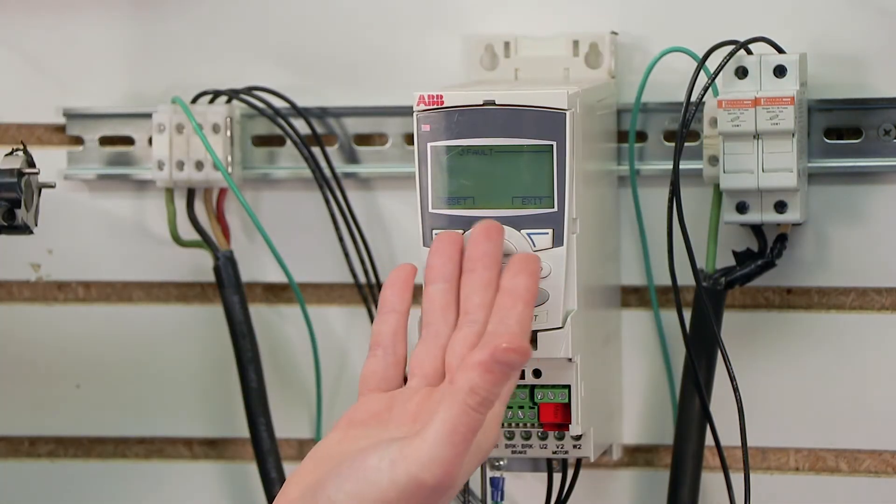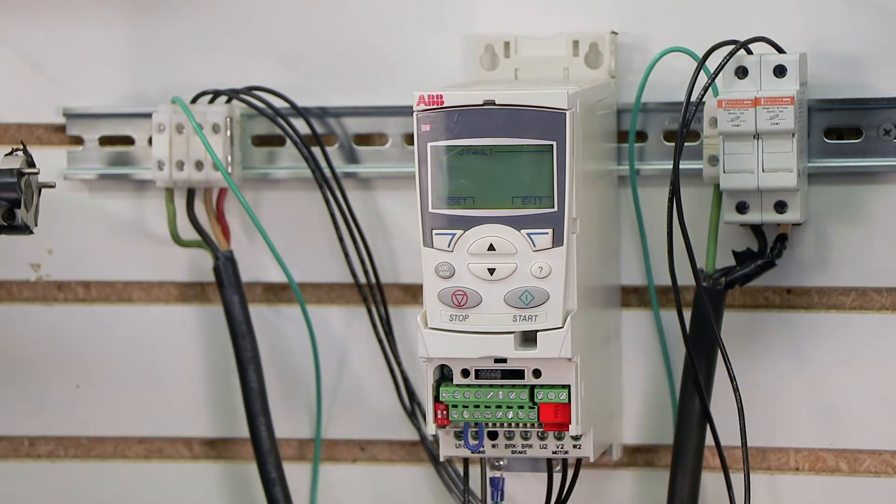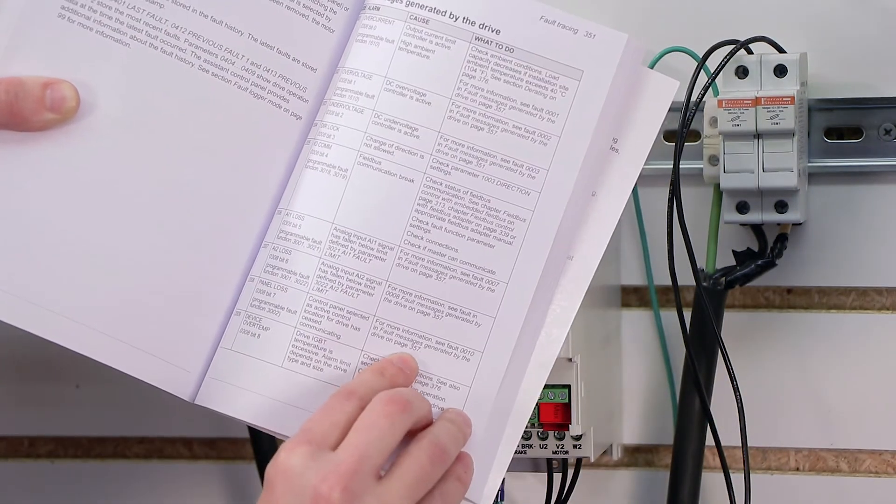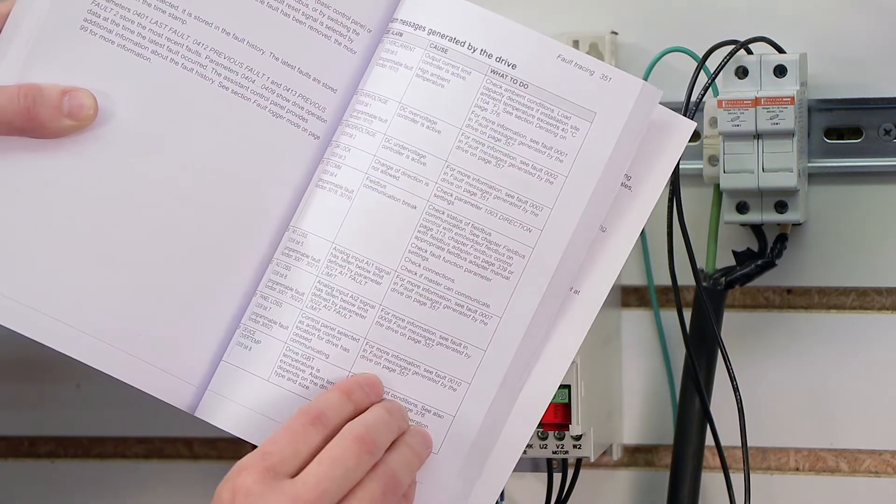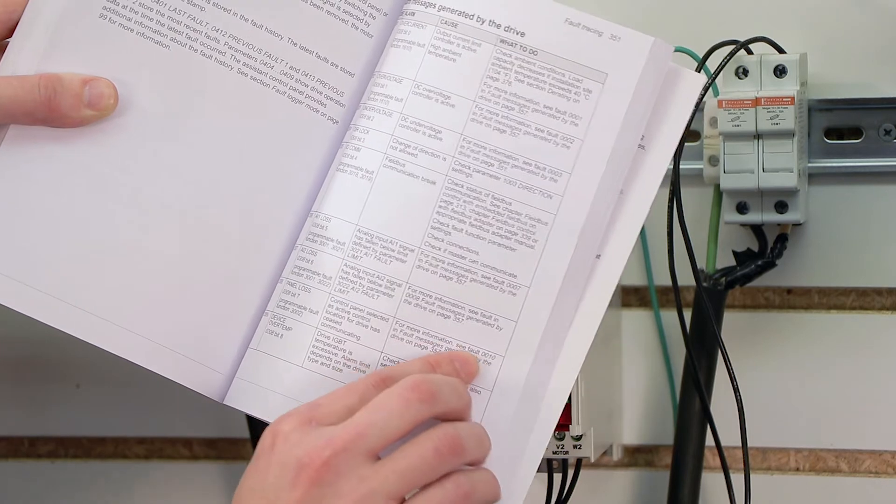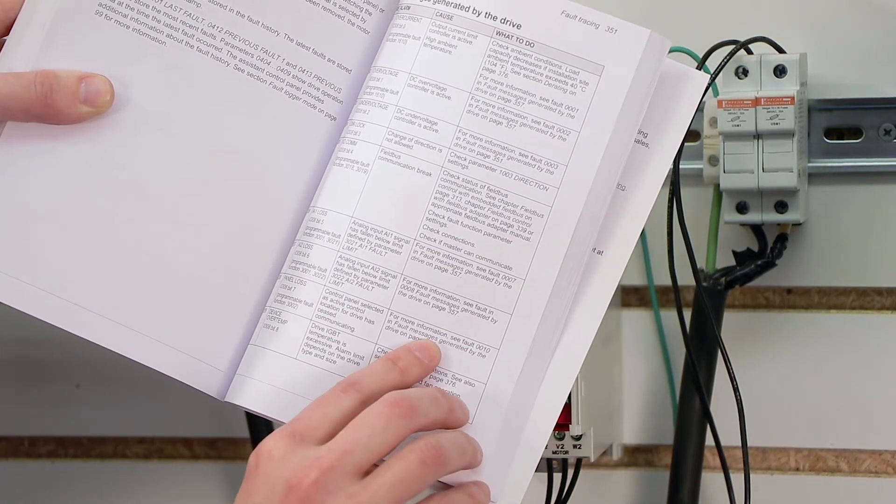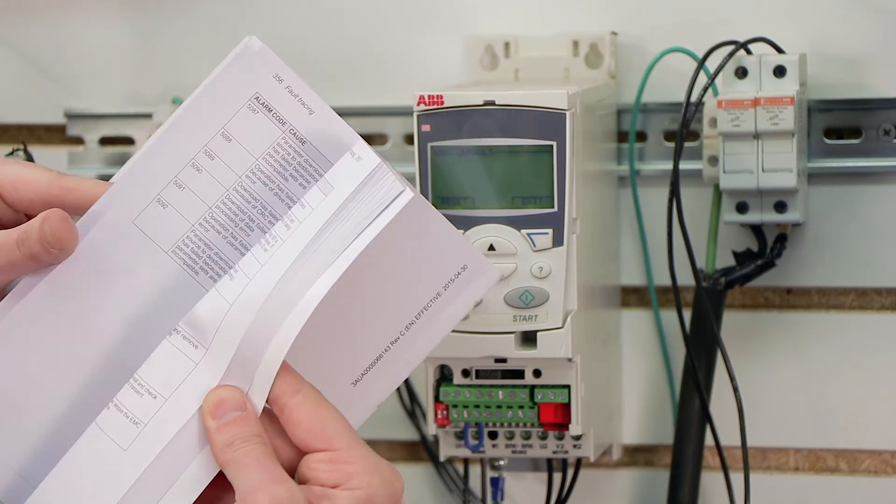So whatever reason it ceased communicating is what I need to diagnose, right? So if I look here on the right-hand side, what's great about this manual is it says what to do, and they will give you some recommended suggestions. This one says for more information, see fault 0010 in fault messages generated by the drive on page 357. So I'm going to go ahead and go to page 357.